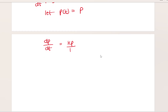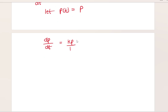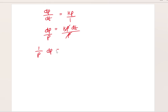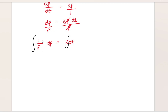Now I'm going to separate variables. Cross-multiplying gives dp equals Kp dt. Dividing both sides by P, P cancels, leaving 1/P dp equals K dt. Integrating both sides: the integral of 1/P is ln P, and on the right side K is a constant, so integrating dt gives t plus some constant A. Remember, it's an indefinite integral, so we must include the constant of integration.